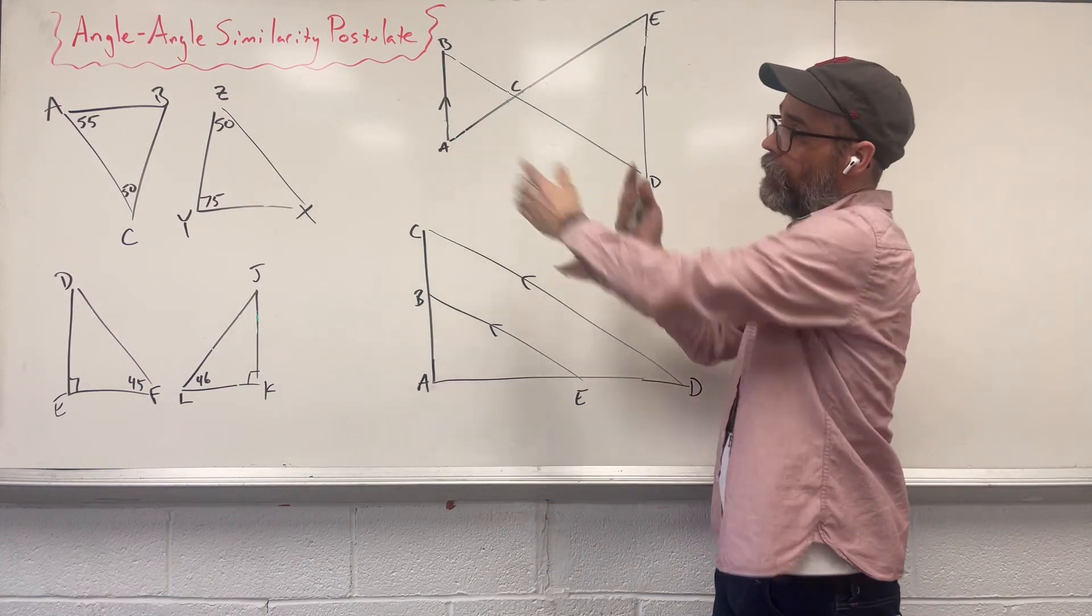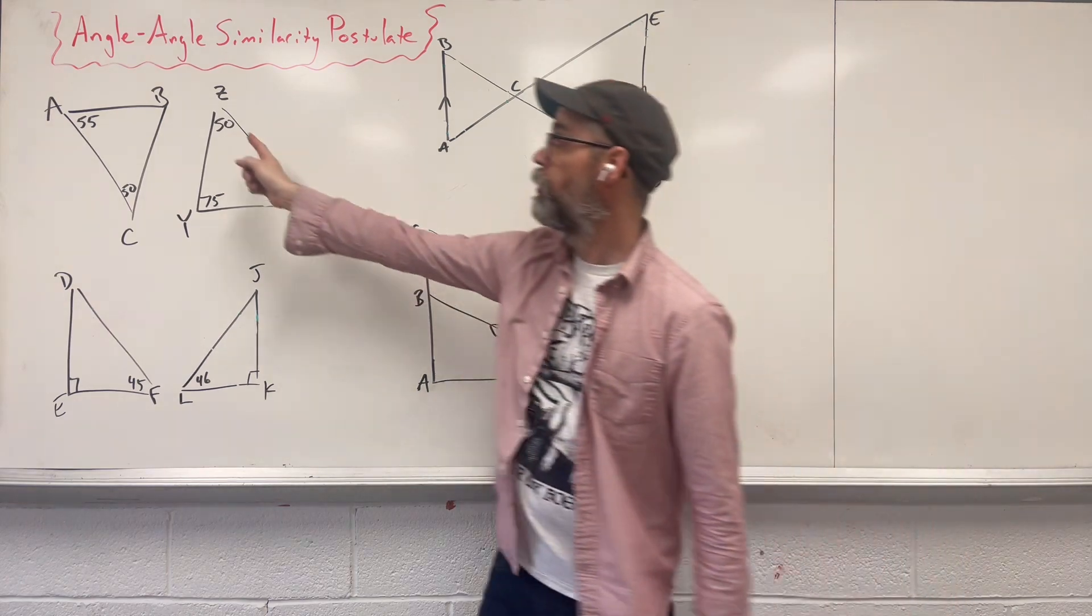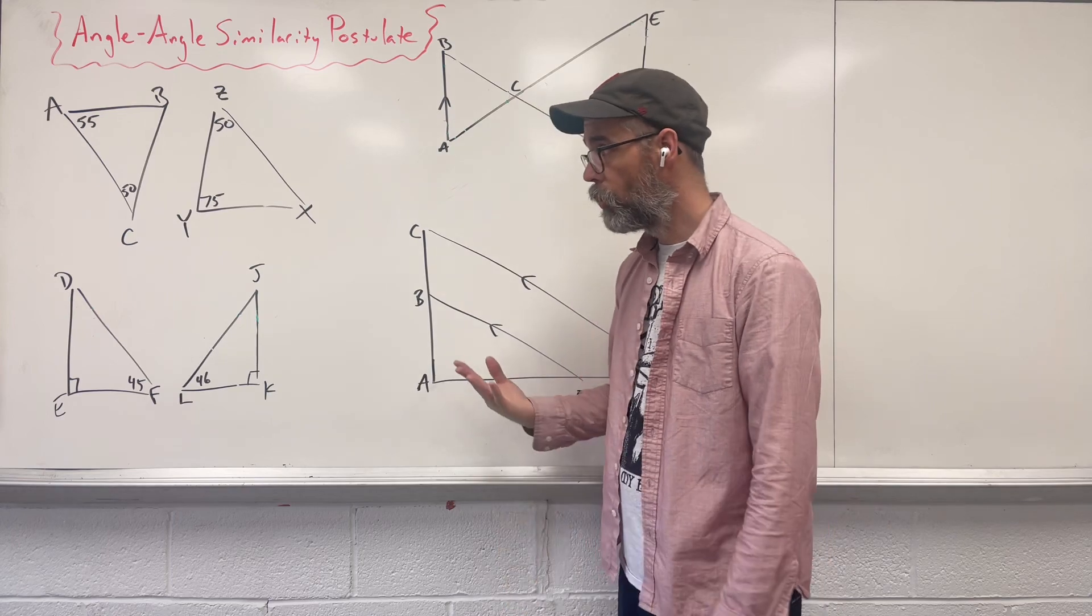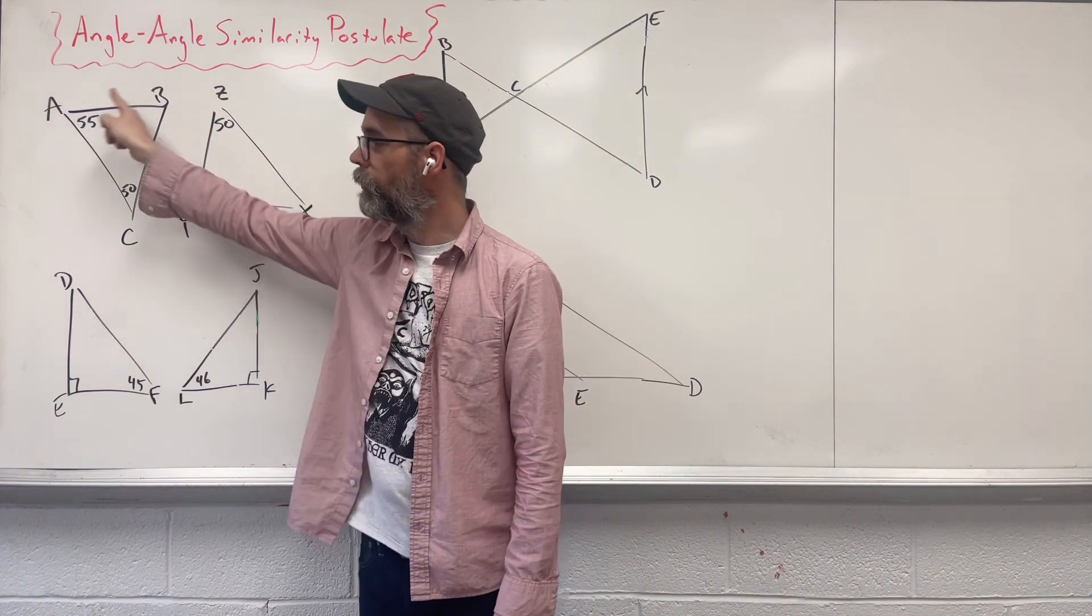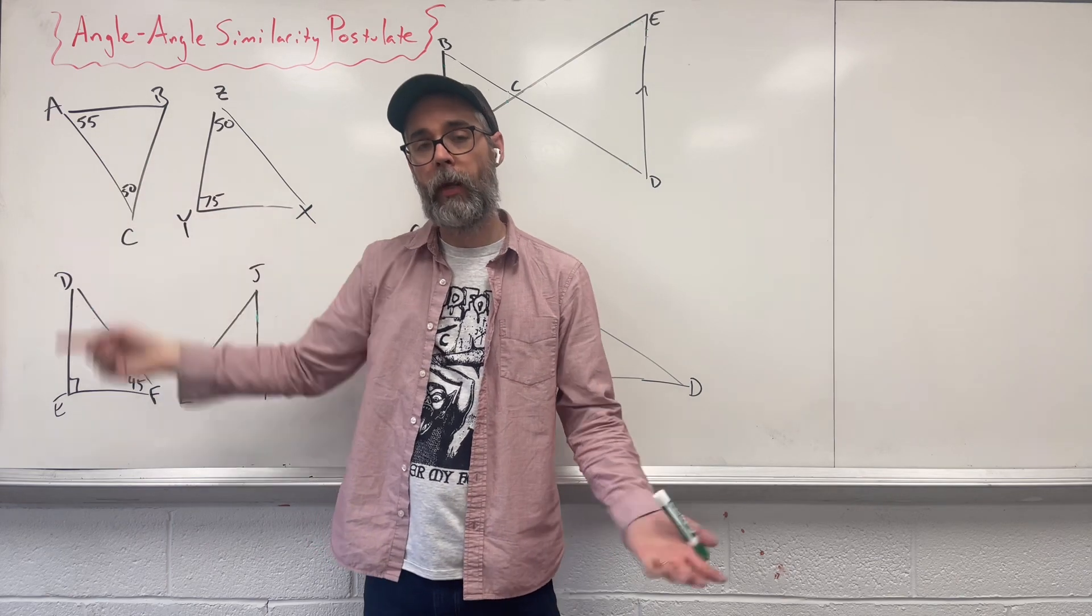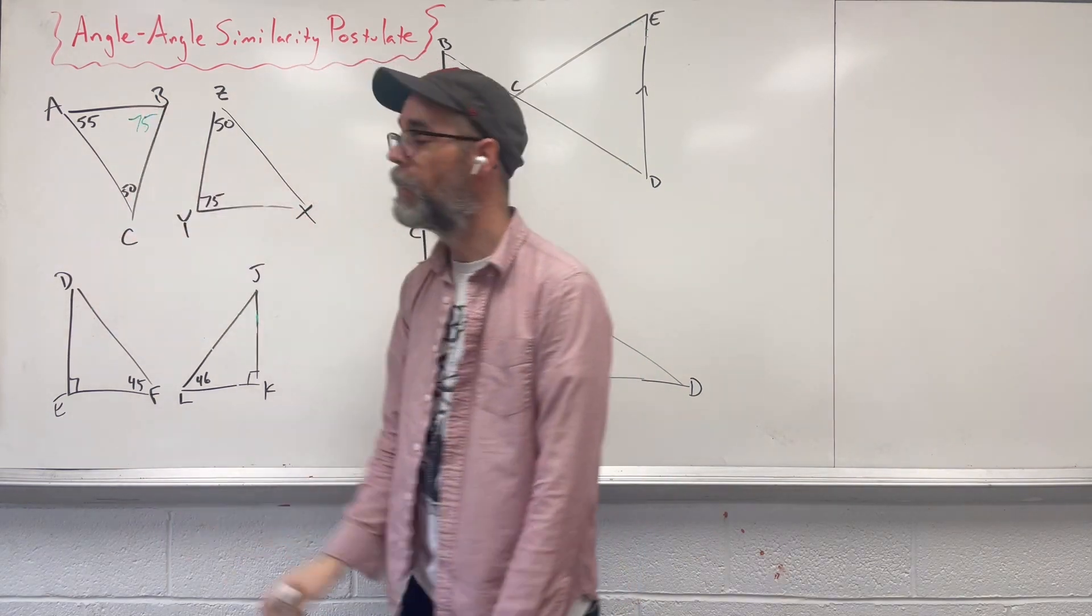So let's take a look at our first pairing here. I have two triangles, they only share one angle here, so we need to find our missing angles. We know that all three angles within a triangle add up to 180, leaving this to have to be 75.